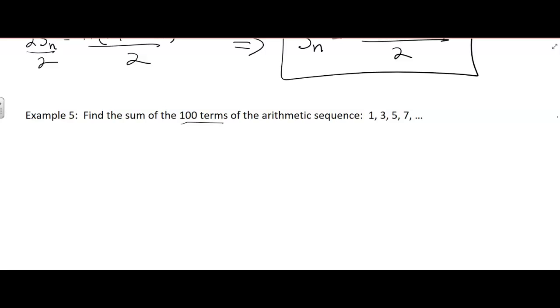So first you'd have to find the 100th term, because we don't know that. So we need to find a sub 100. We can use our general formula. A sub n equals the first term, 1, plus (n minus 1) times d. Now what's the d here? 2, you're adding 2 every time. So d is 2.